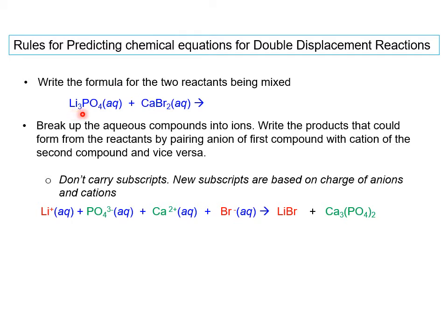Lithium was with phosphate, but on the product side, lithium is going to take the place of calcium and be with bromide. So we get lithium with bromide and calcium with phosphate. Notice that the subscripts do not carry through the same way — here we had lithium with a subscript of three, but in the product lithium does not have a subscript. The new products that form are independent of the subscripts originally present on the reactant side.